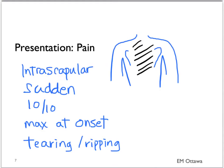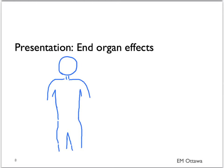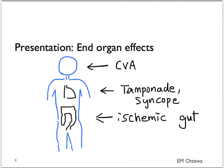The pain may sometimes radiate to the anterior chest. In terms of end organ effects, it is all based on which end organs are being affected. If the carotid arteries are being affected, the patient will present with a CVA. If the pericardium is affected, the patient might present with syncope or tamponade. If the gut vessels are being affected, the patient can present with ischemic gut. If vessels like the iliacs are affected, the patient might present with ischemic limb symptoms.